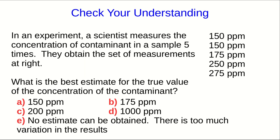Let's check that you're understanding this so far. So suppose that a scientist has measured the concentration of a contaminant, and they've obtained the results shown here in this list: 150, 150, 175, 250, and 275 ppm. And we want to know what the best estimate for the true value of the concentration is. So if you're in the course, then Moodle will ask you this question. But even if you aren't in the course, I suggest you should come up with an answer before going on to the next part.